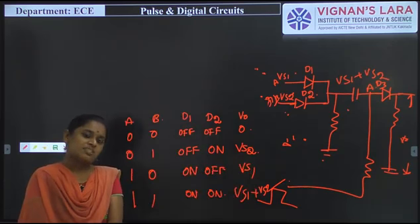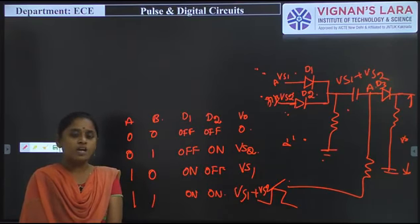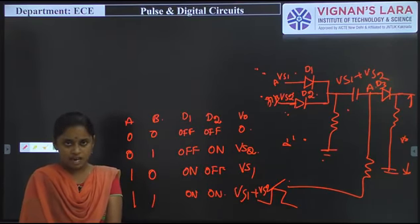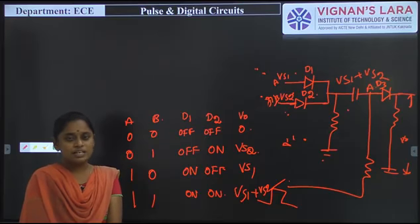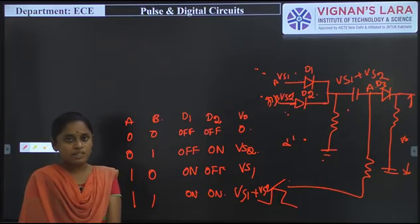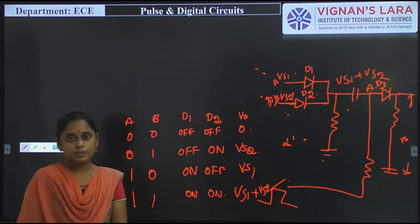These limitations can be avoided by using bidirectional sampling gates. A bidirectional sampling gate can be designed with diodes as well as transistors. In the next class we will discuss bidirectional sampling gates using diodes as well as transistors. Thank you.